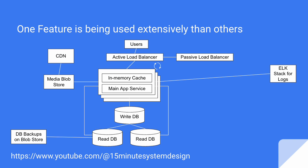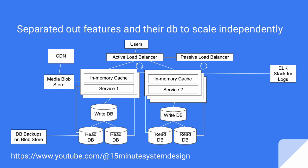After a few months, we realize one feature of our service is being used far more extensively than the other, and we may need to scale it independently rather than just adding more machines. To handle this, we divide our main application service into two separate services, each with multiple instances and a separate database running on the cloud. This way we can run a higher number of instances for the more heavily used service.